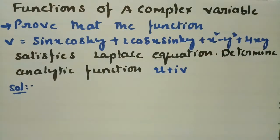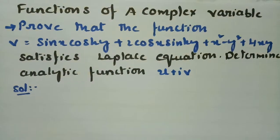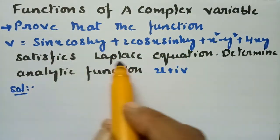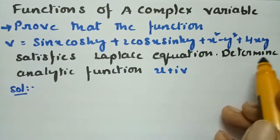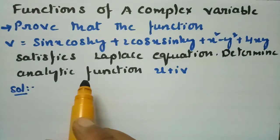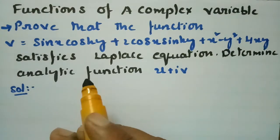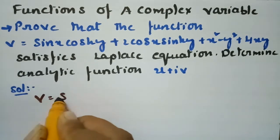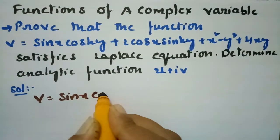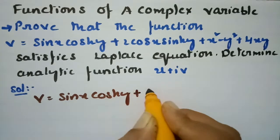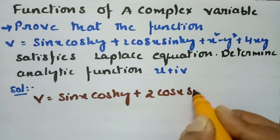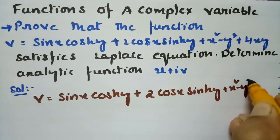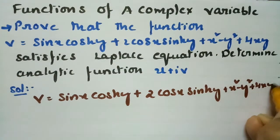In today's video I am going to solve a problem from functions of complex variables. I am going to prove that the function v satisfies the Laplace equation and determine the analytic function as u plus iv. Here v is given as sin(x)cosh(y) plus 2cos(x)sinh(y) plus x squared minus y squared plus 4xy.